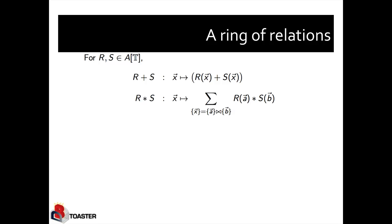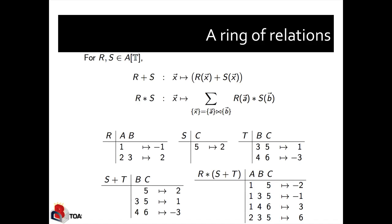We define the multiplication of two GMRs as the convolution product. That means we map any tuple X to the sum of products of R applied to tuple A times S applied to tuple B, where A and B together join to get X. That means, in other words, I can project X in ways to get A and B.